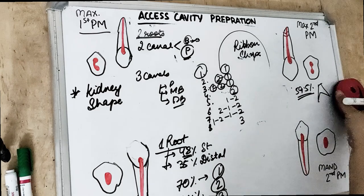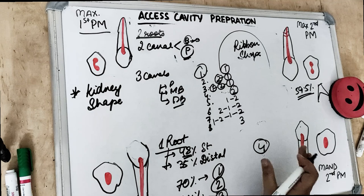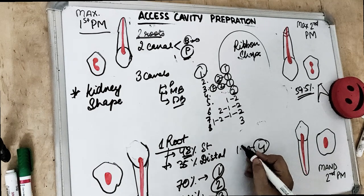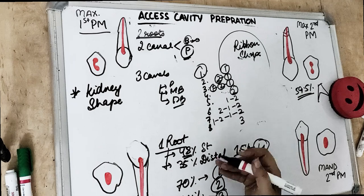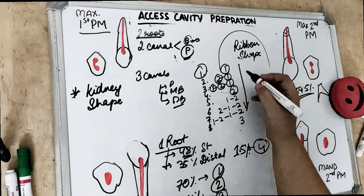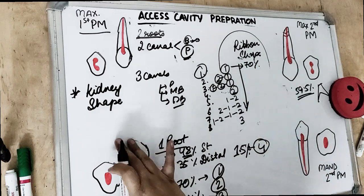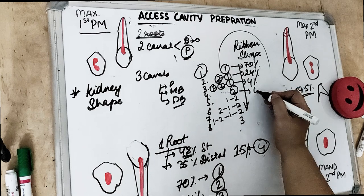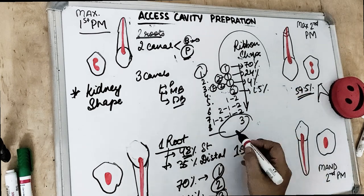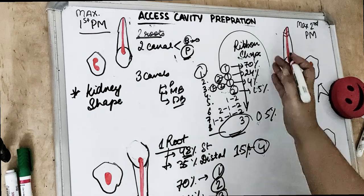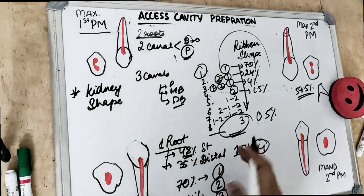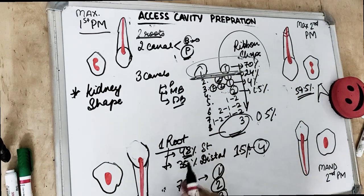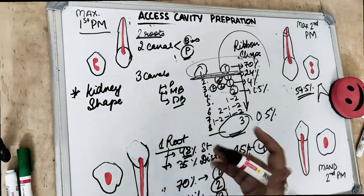Vertucci type 4 — two canals leaving from two foramina — is seen in 1.5% of cases. So to summarize for the mandibular first premolar: Vertucci type 1 is 70%, type 2 is 24%, type 3 is 4%, type 4 is 1.5%, and type 8 (three canals) is 0.5%. Most of the time it is one root, one canal, and one foramen — seen in 70% of cases — but there are variations.